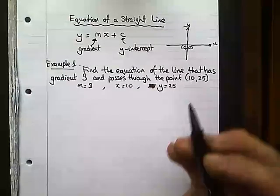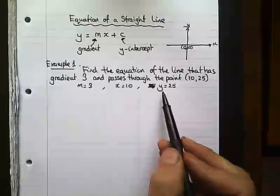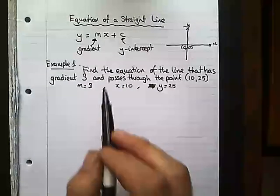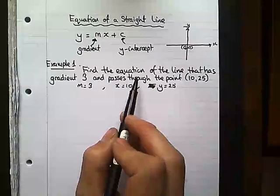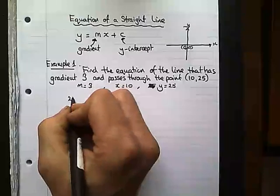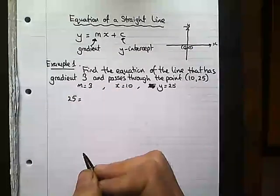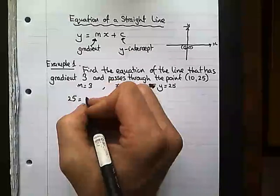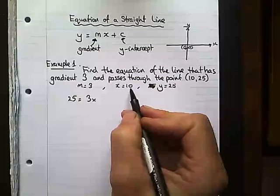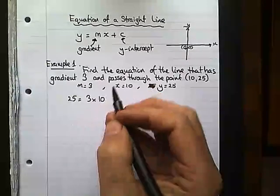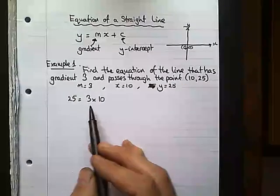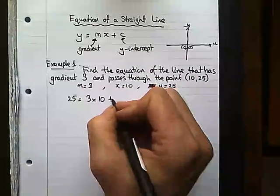Now I can substitute these values into my equation and find out my c value. Remember, I'm trying to write this as an equation of a line. So my y value equals 25. My m is 3. I'm timesing that by my x, which is 10. So instead of writing x, I write 10. I've substituted in three values I've been given, but I don't know what the c is. So I do plus c.